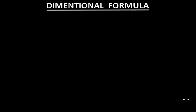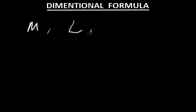Welcome, students. Now we will learn the dimensional formula of physical quantities. A physical quantity can be expressed by a dimensional formula. The dimensional formula is written with the help of mass, length, and time. Mass is expressed by capital M, length by L, and time by T. With the help of their exponents, a physical quantity is expressed.